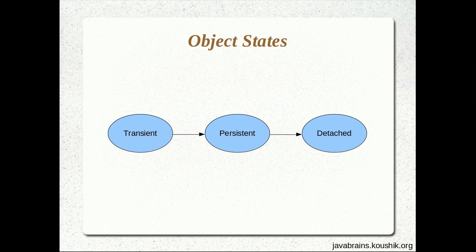As soon as you have a new object, it remains transient unless you do something about it. Once you assign that object to Hibernate and ask Hibernate to save that object, it becomes a persistent object. When the object is in the persistent stage, Hibernate is going to track the changes and save them to the database. And once the session is closed, the object becomes a detached object, so whatever changes happen to it are not tracked by Hibernate.